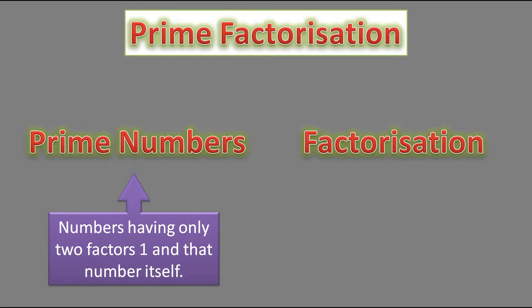To understand prime numbers, first you must know about factors. I have made one video on factors as well — you can go through that, the link is in the description. So, numbers which have only two factors — one and that number itself — are called prime numbers.